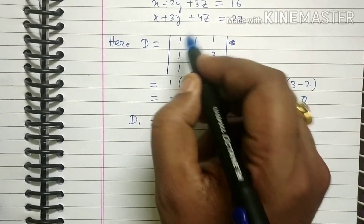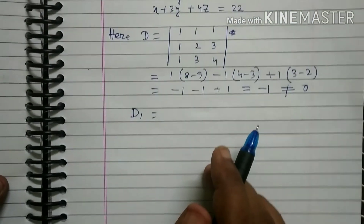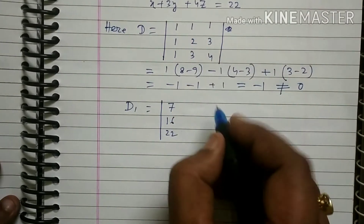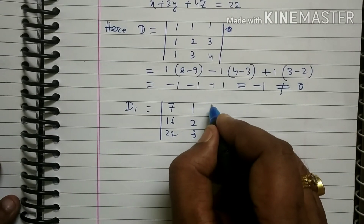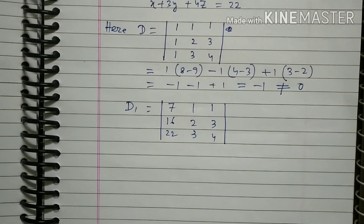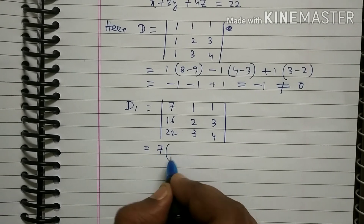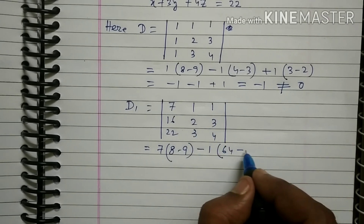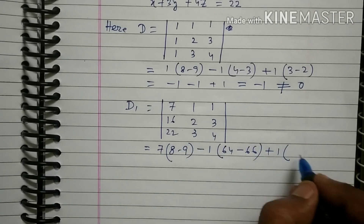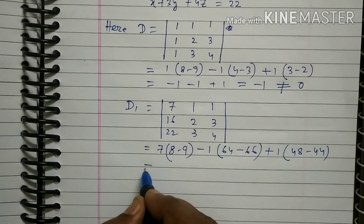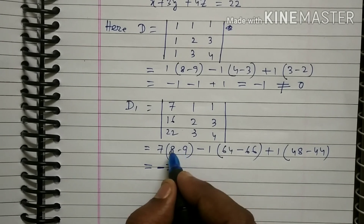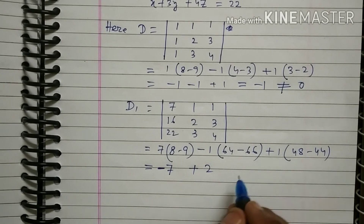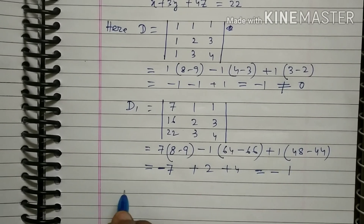Next, D1: the first column is replaced by 7, 16, 22, giving the matrix with rows 7 1 1, 16 2 3, 22 3 4. Computing: 7(8 minus 9) minus 1(64 minus 66) plus 1(48 minus 44), which equals minus 7 plus 2 plus 4, giving minus 1.